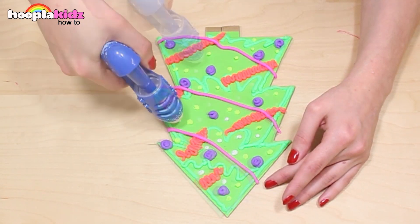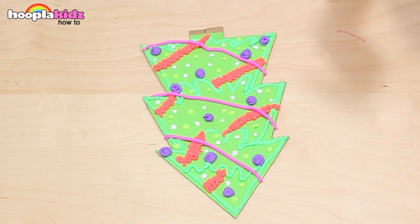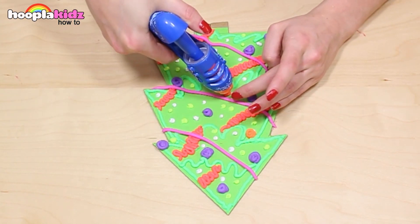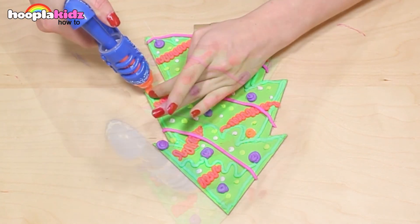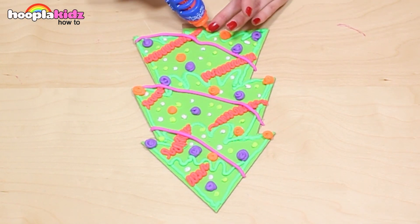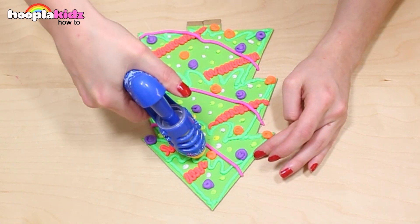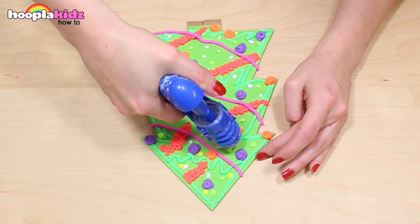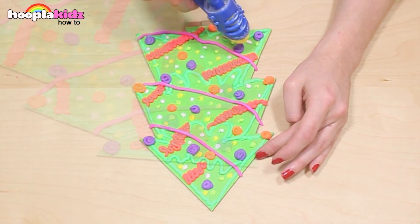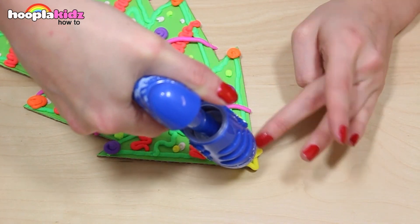I'm also using white dots too. Why not add some orange baubles as well? Keep decorating until you're happy with how your tree looks. You can use any different colors you like.